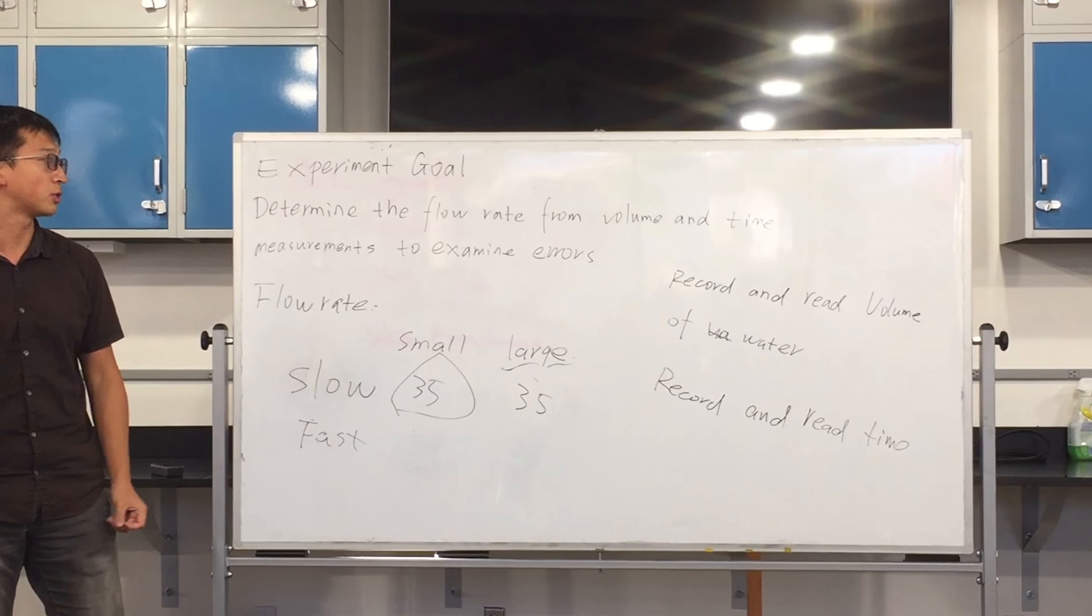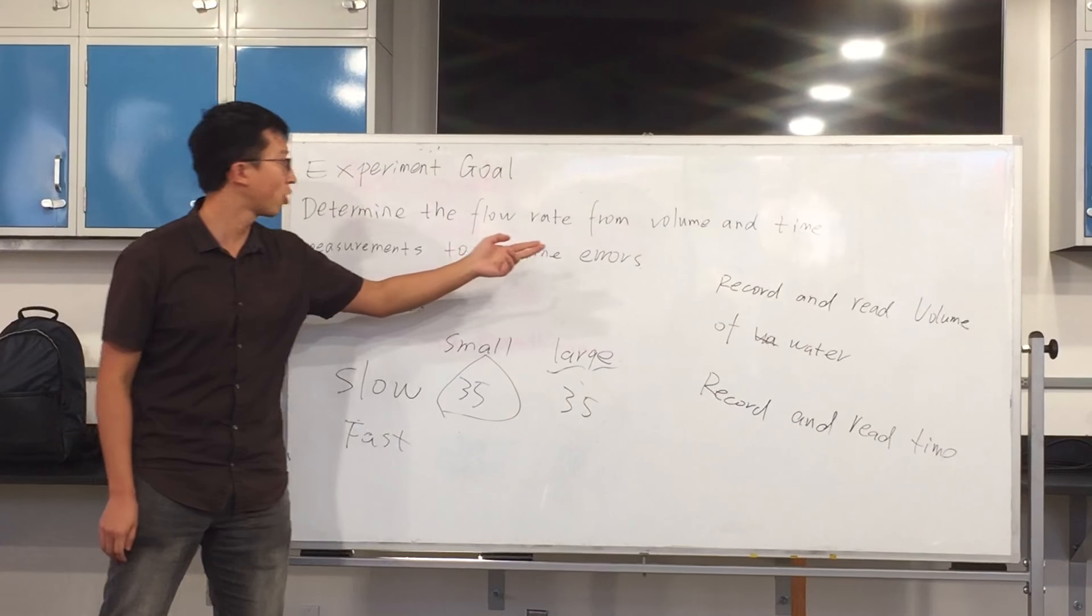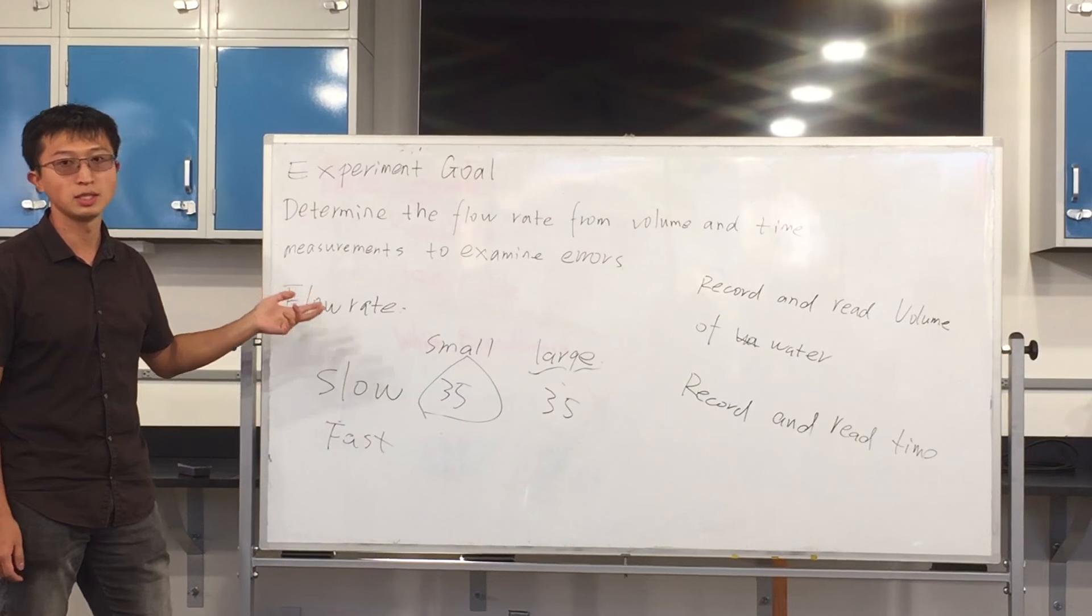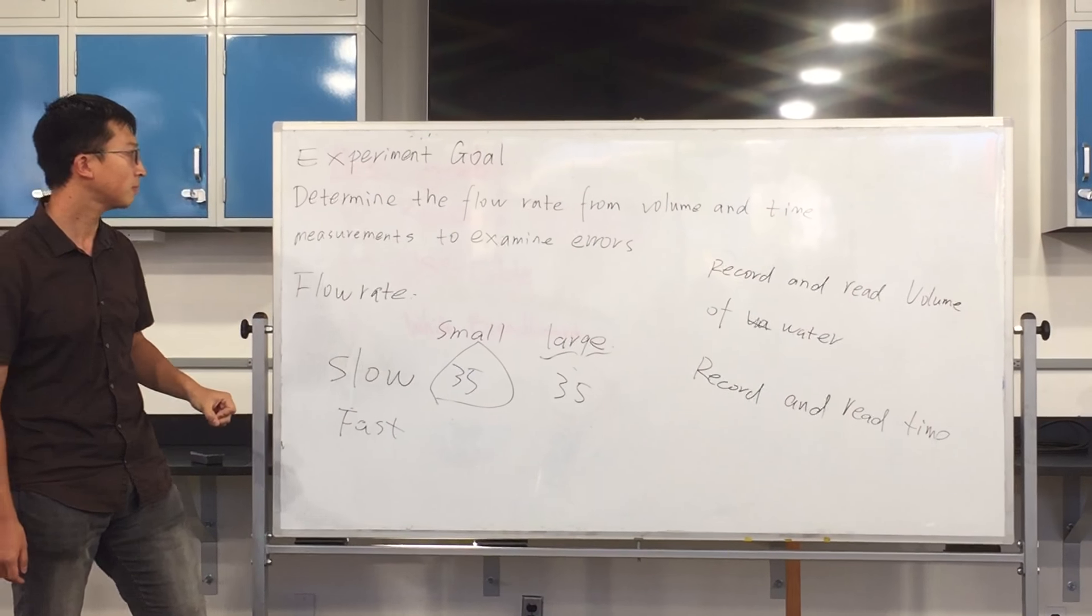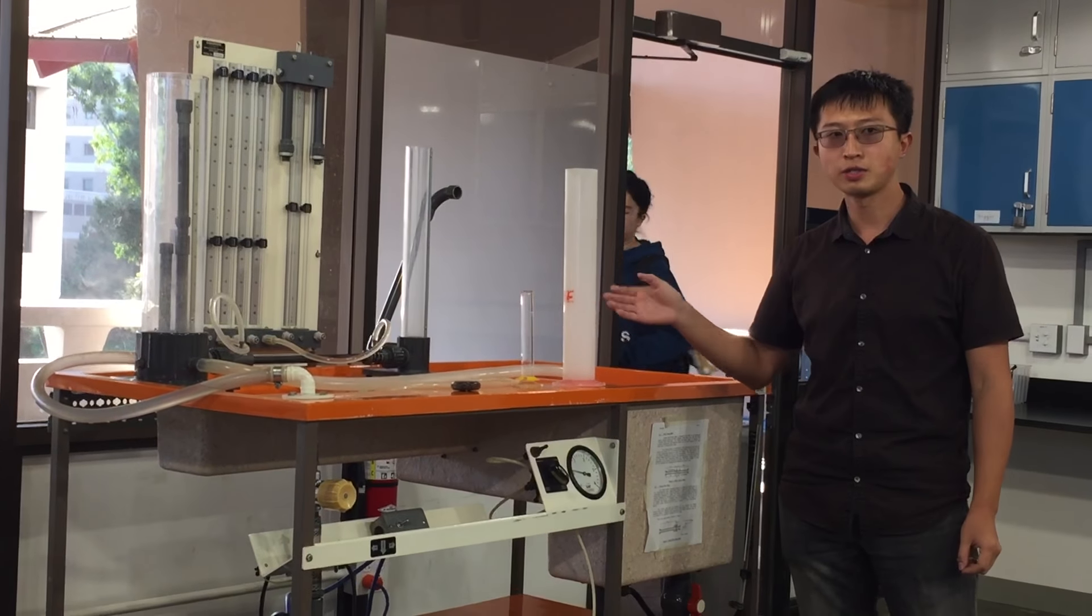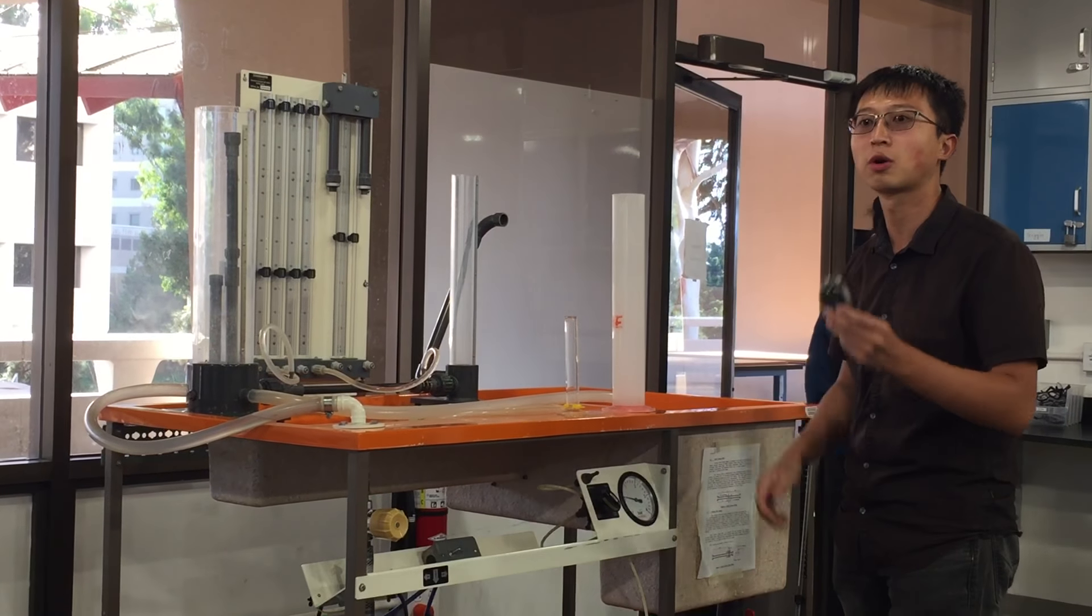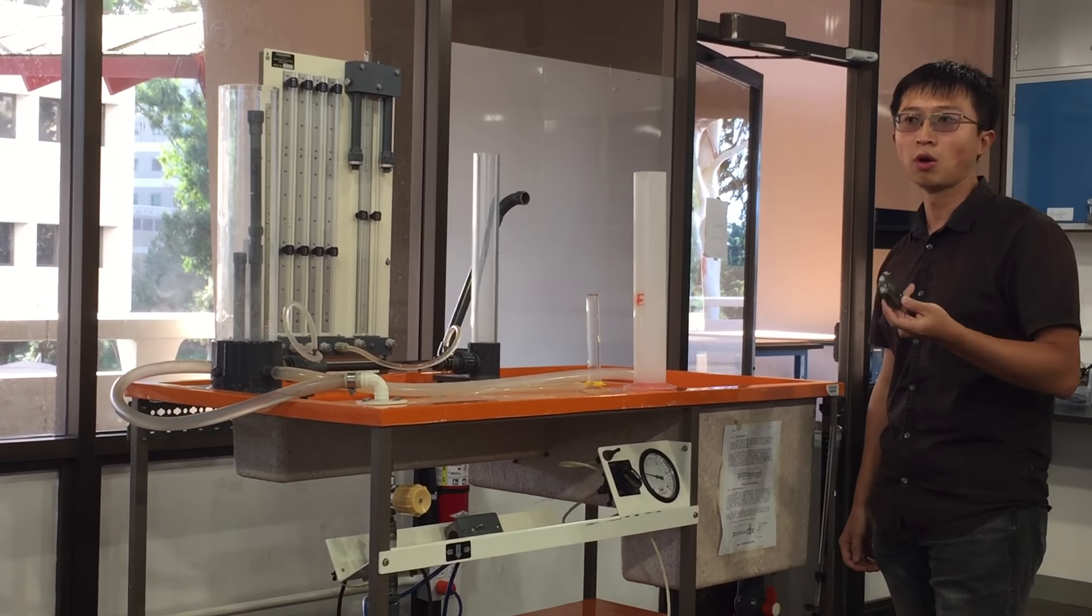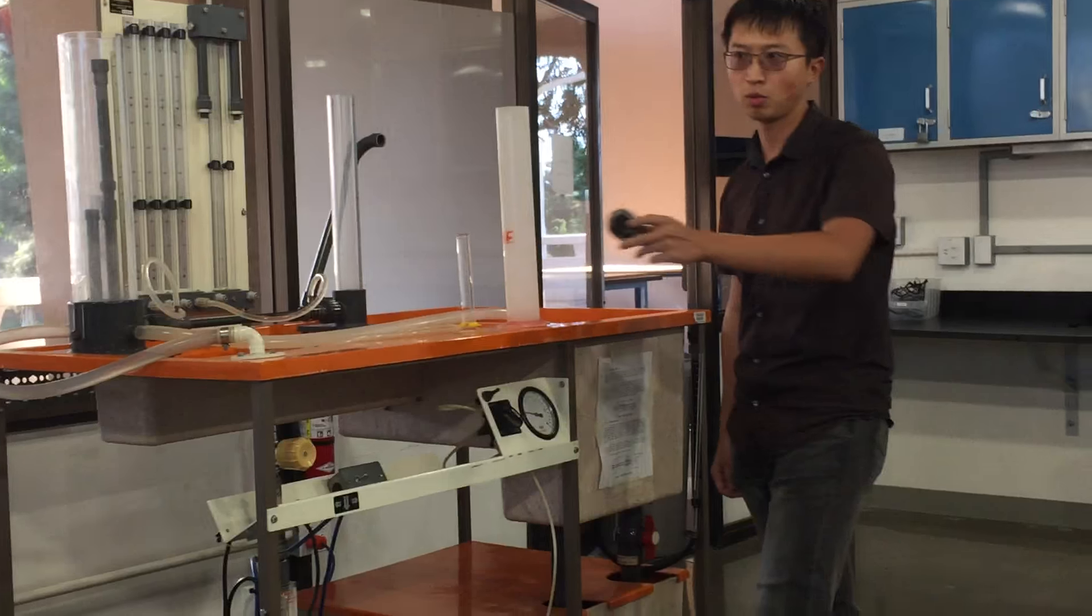Today's experimental goal is to determine the flow rate from the volume and time measurements to examine the experimental errors. We have three experimental apparatus: the big graduate cylinder, small graduate cylinder, and a stopwatch to record time. You could use your own phone to record time, that will be fine.